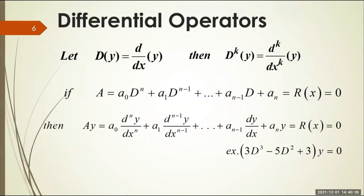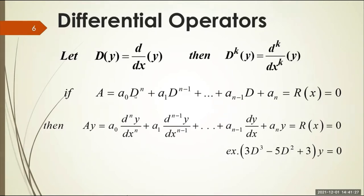Let's go to differential operators. The differential operator D represents the derivative of y with respect to x. So D of y is dy/dx, and D to the k-th power of y is the k-th order derivative of y with respect to x. The constant coefficients a sub zero, a sub one, through a sub n are the constant coefficient multipliers of the differential operators.